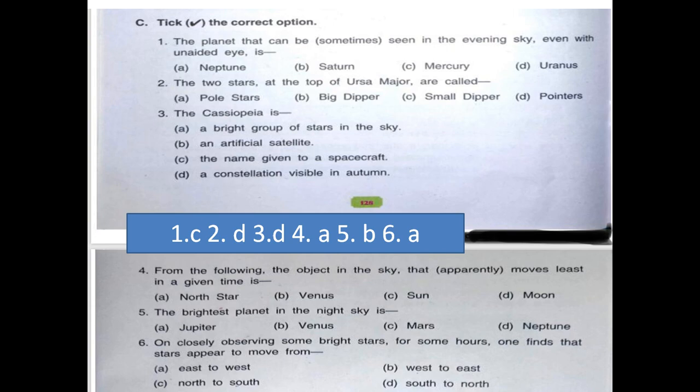Question number five. The brightest planet in the night sky is Jupiter, Venus, Mars and Neptune. And our answer is B, Venus.